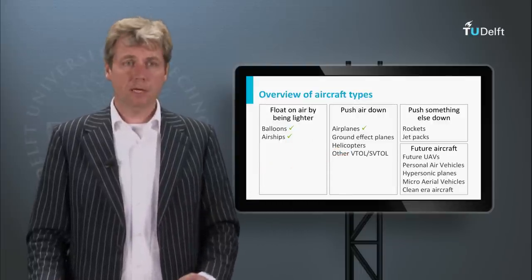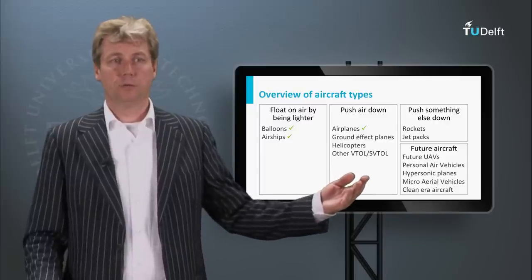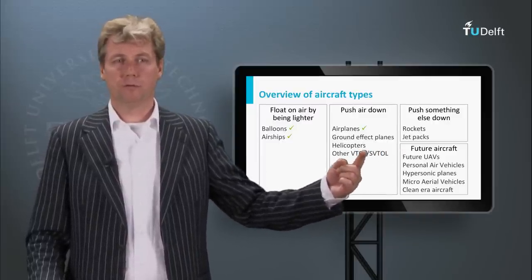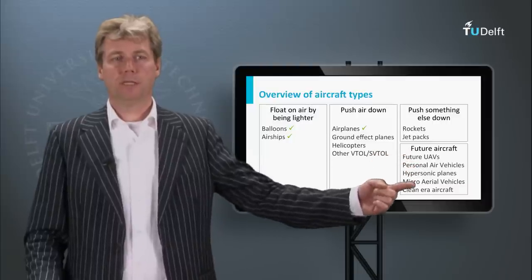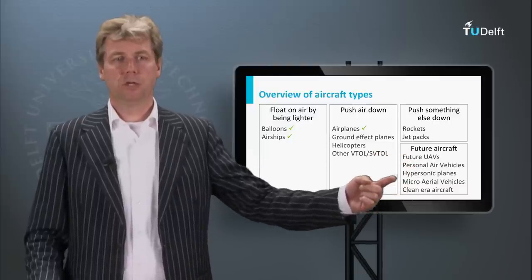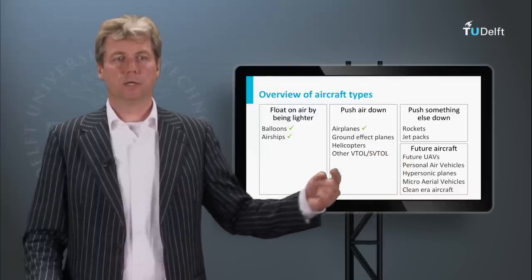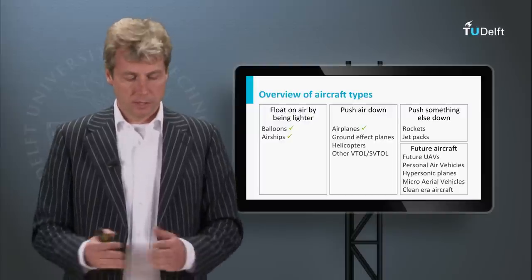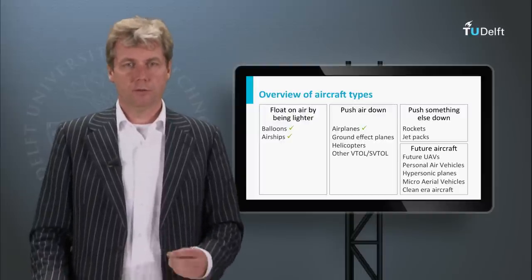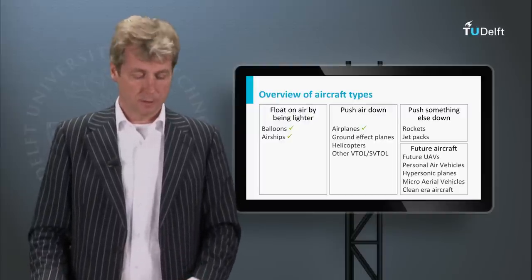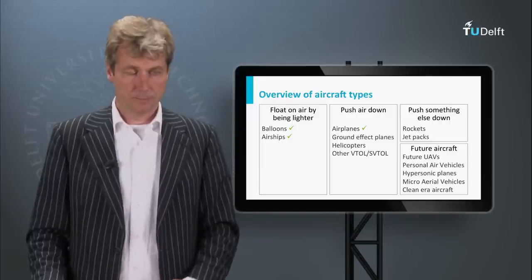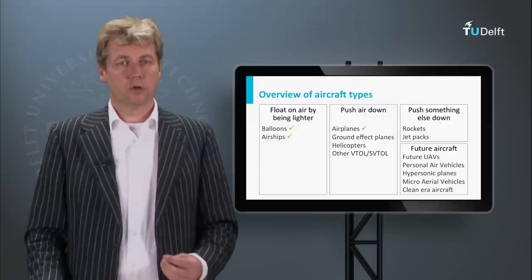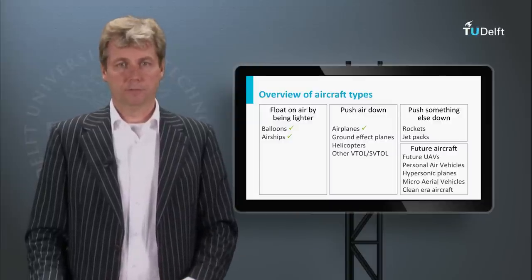But there are many other ways to fly — to push air down, to push something else down. And if we look a bit further into the future, there are plans for vehicles, most of them in this category, which we haven't really looked at. So in these final four clips we will have a look at some of those vehicles and their principles. The first one, as you can see in the figure, are the so-called ground effect vehicles.